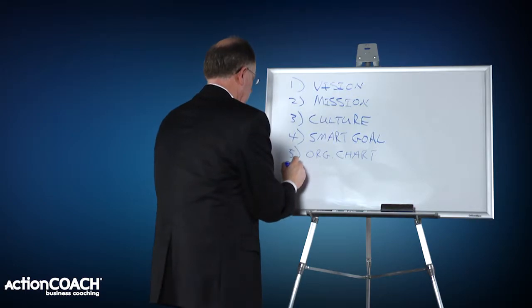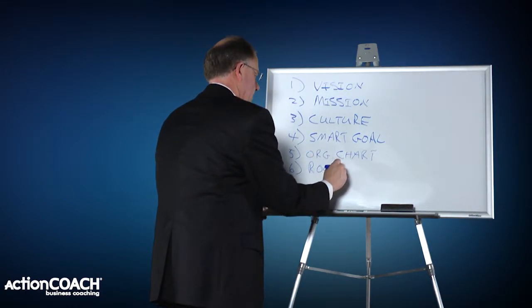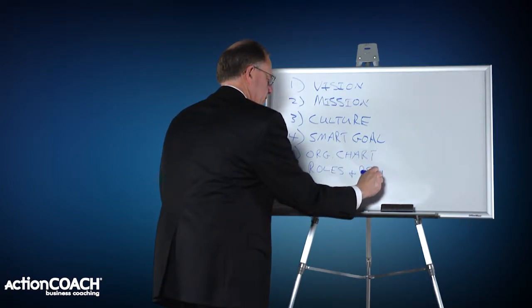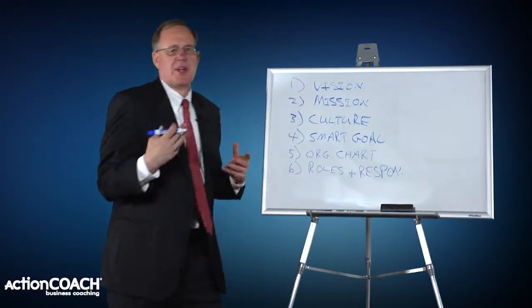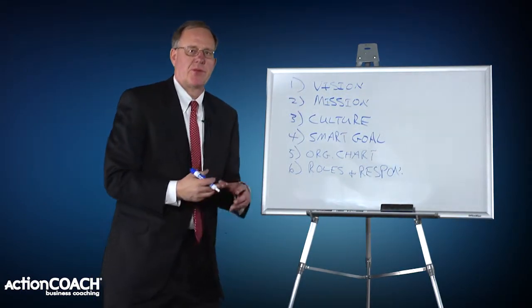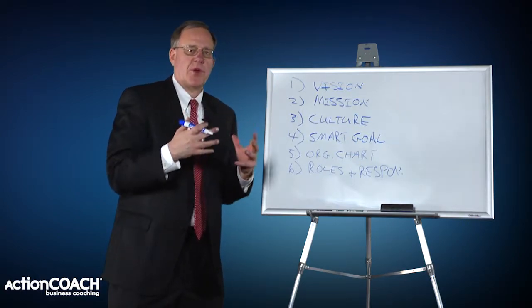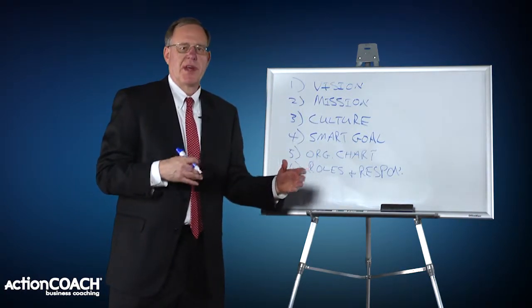Number six, you have to have roles and responsibilities outlined. So roles and responsibilities, we're talking about job descriptions. We're talking about what people do and when they do it. Who's responsible for the outcomes?